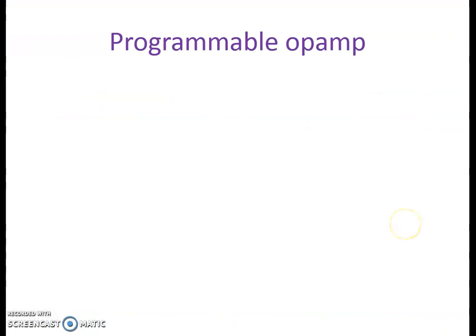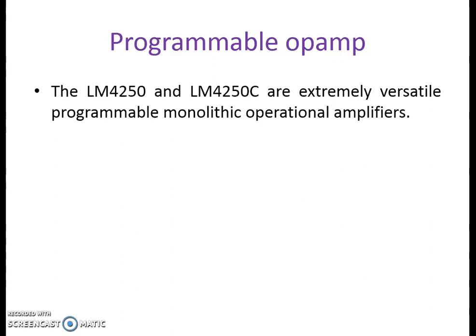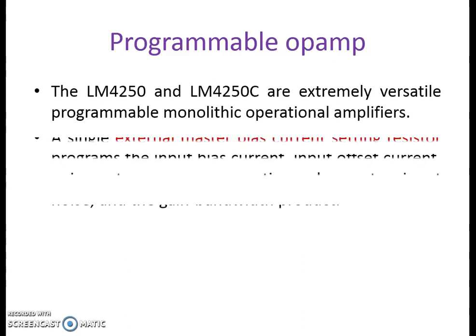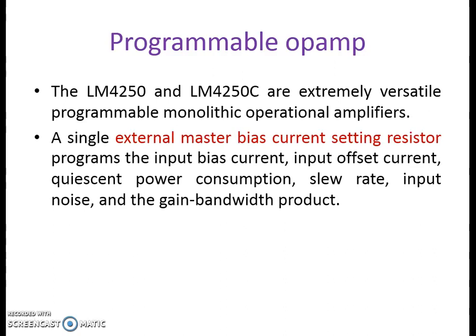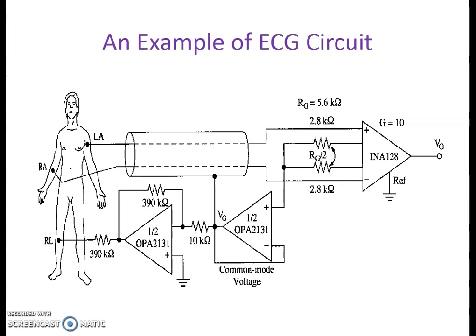Nowadays op-amps used for making the preamplifier or instrumentation amplifier of the ECG machine have a characteristic of programmability. For example, the LM4250 or LM4250C are extremely versatile programmable monolithic operational amplifiers. Programmability means a single external master bias current setting resistor programs the input bias current, input offset current, power consumption, slew rate, input noise, and the gain bandwidth product. The device is truly a general-purpose operational amplifier. In one example ECG circuit, the right arm and left arm are both connected to the instrumentation amplifier, and part of the common mode signal is fed back to the right leg through the right leg driver circuit.